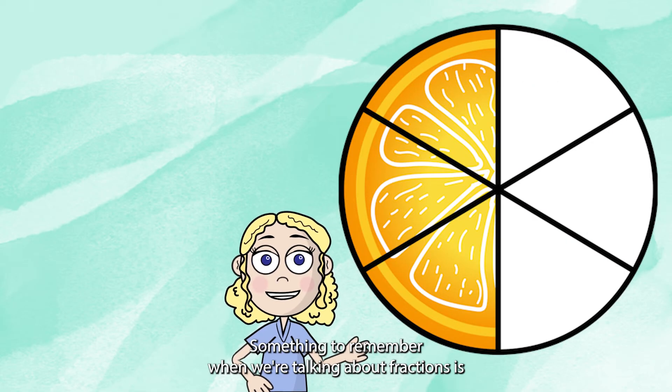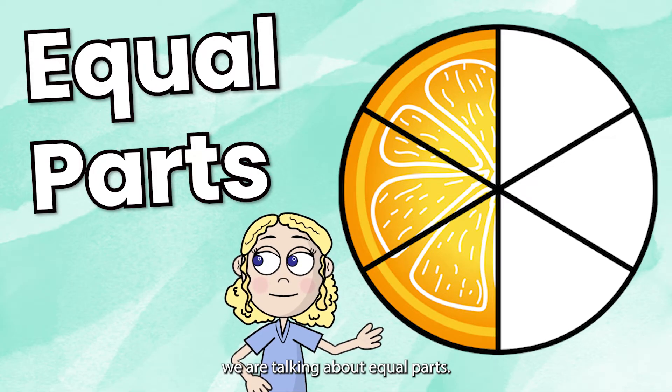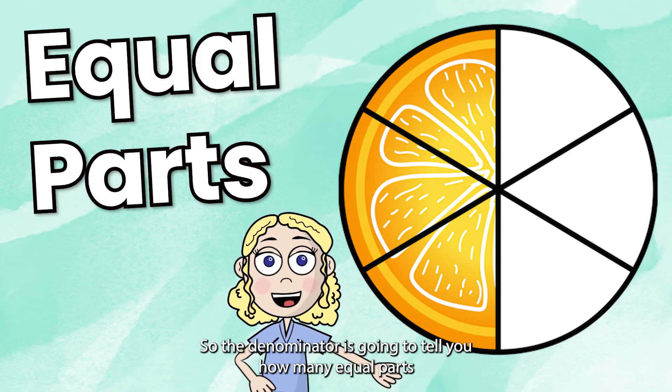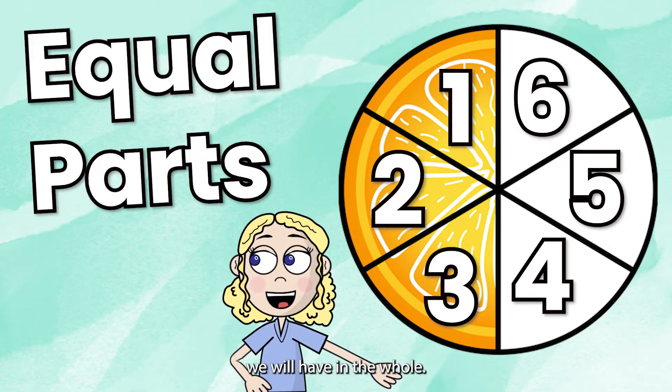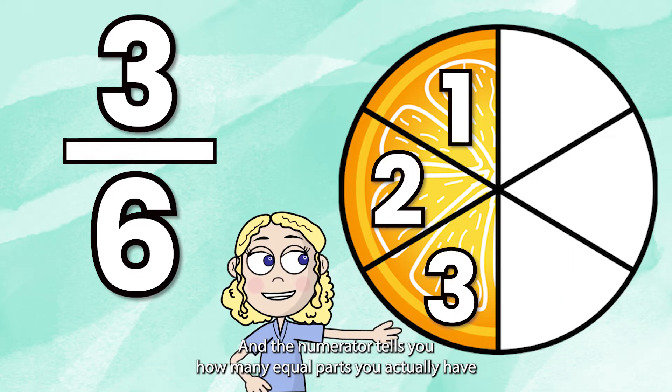Something to remember when we're talking about fractions is we are talking about equal parts. So the denominator is going to tell you how many equal parts we will have in the whole and the numerator tells you how many equal parts you actually have.